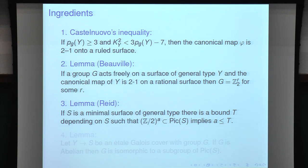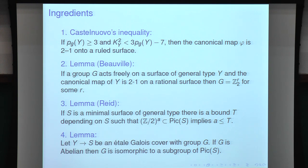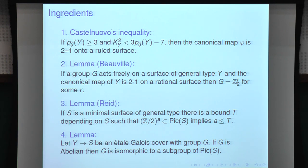The last ingredient is the following lemma: if I have an étale Galois cover with abelian group G, then G is isomorphic to a subgroup of Pic(S). Why? Because taking characters, G-dual injects into Pic(S), since for an abelian group the decomposition of π_*(O_Y) is all in line bundles.